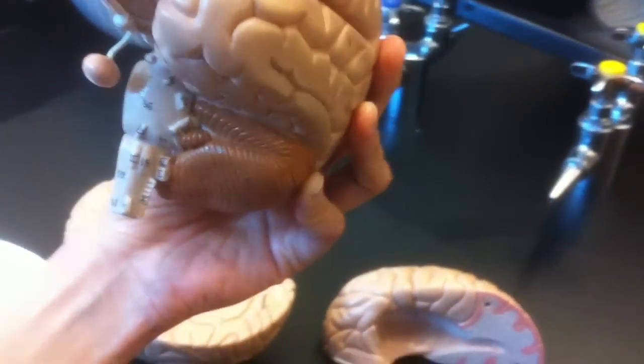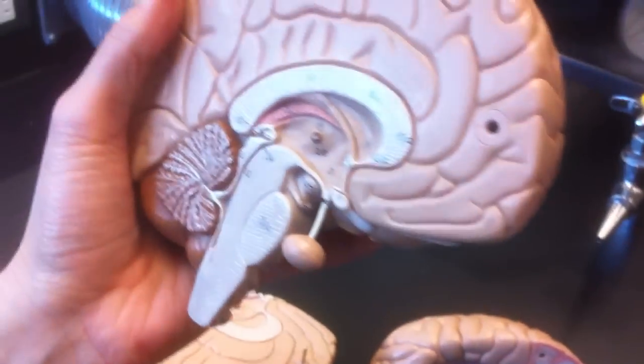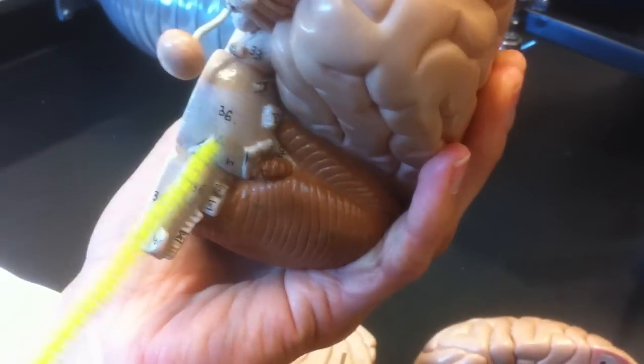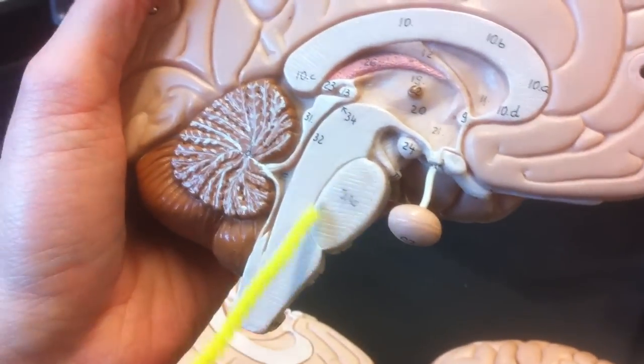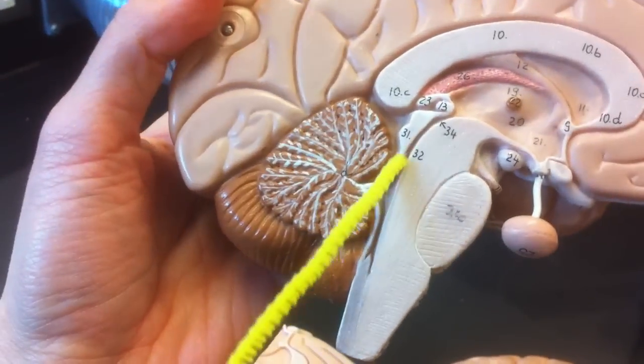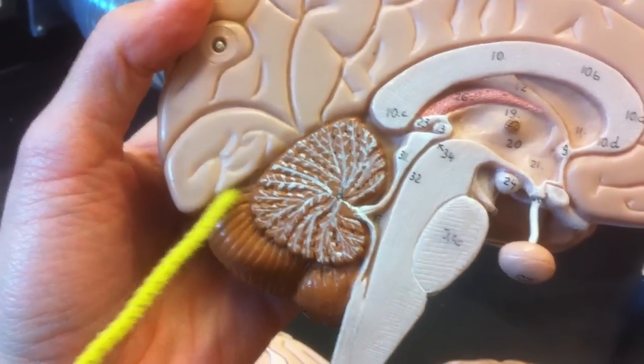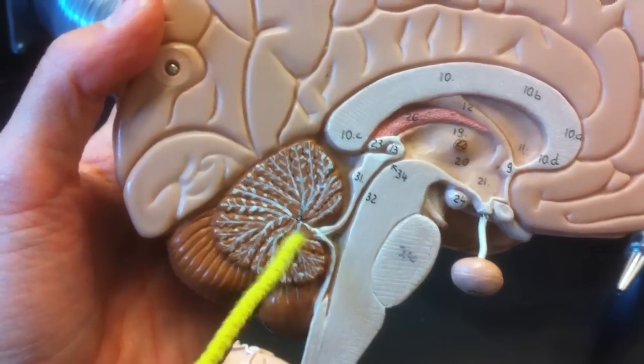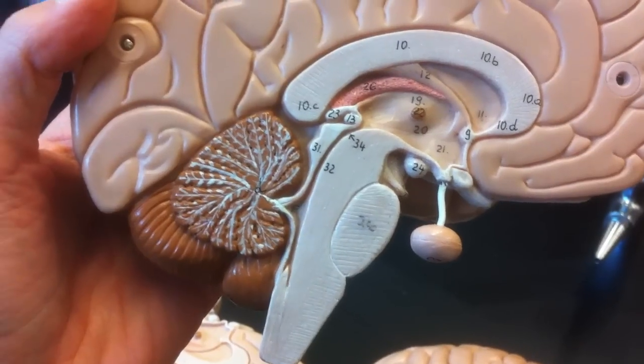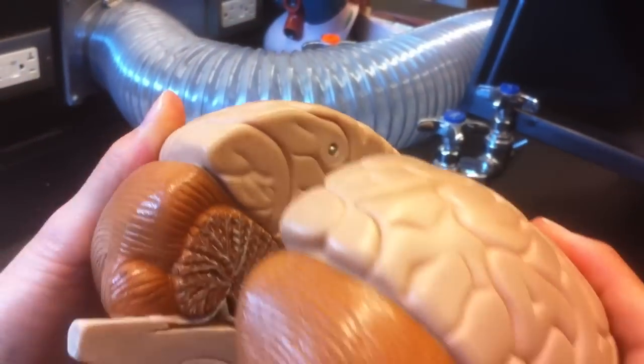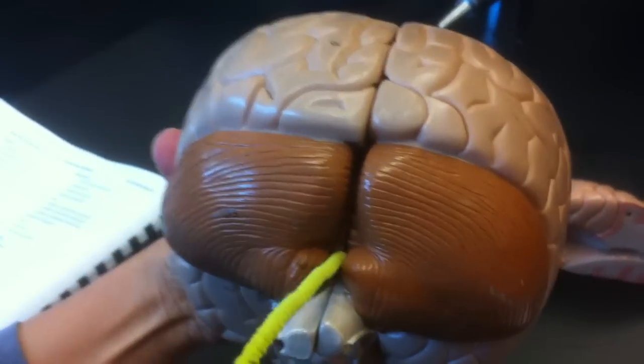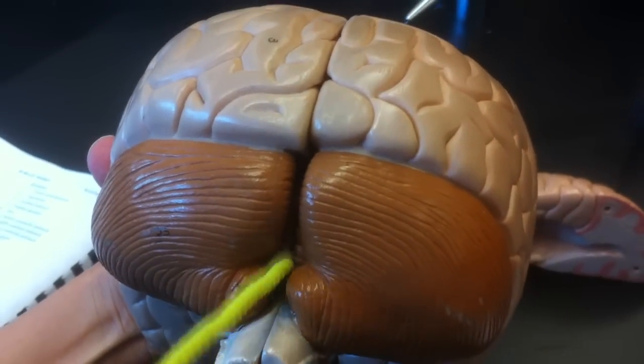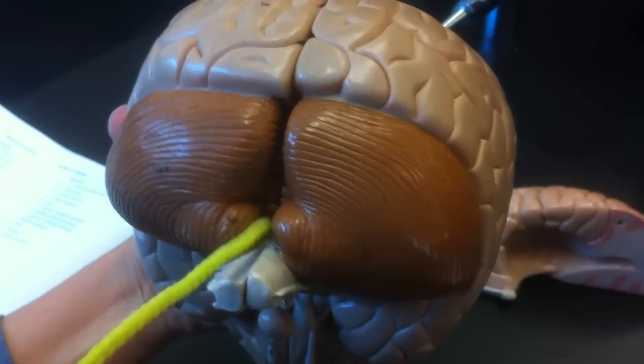Moving on to the pons and cerebellum, which make up the metencephalon. The pons, number thirty-six here, also here. The cerebellum, this brown chunk, the little brain. The white matter is the arbor vitae, tree of life. And the vermis holds the cerebellum together, the cerebral hemispheres together. It's in here, right here. These two little tracts come together. They're not tracts.